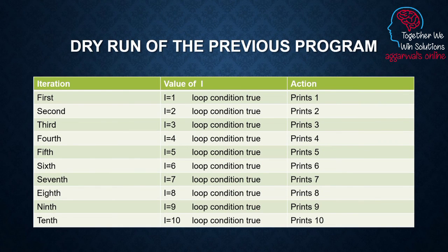I have provided a dry run here as well since I changed the language. In the first iteration when i equals 1, the loop condition is true, it executes and prints 1. Because of i++, i's value becomes 2. It goes back and checks whether the condition is still true — it is — so the loop executes and prints i's current value. This process continues as long as i's value remains at or below 10. The moment i becomes 11 — and if you recall the condition is i less than or equal to 10 — the condition becomes false, the loop gets terminated, and you are out of the loop.